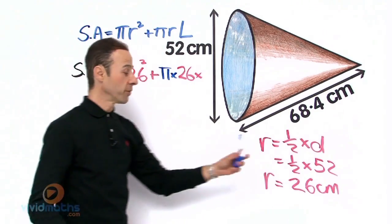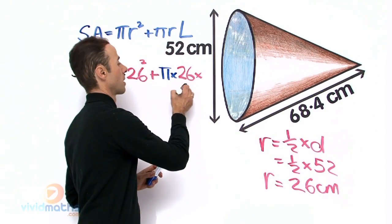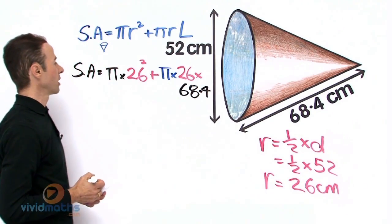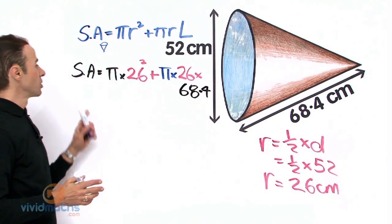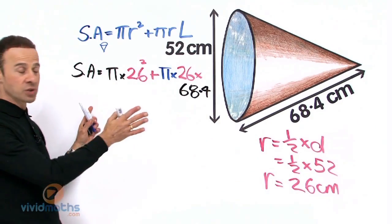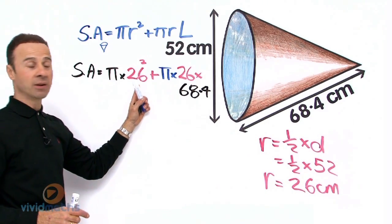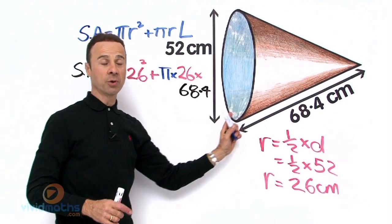Again 26, and the slant length is 68.4. Okay, let's take a closer look at the formula again. Surface area for a cone, a conventional cone, π times 26 squared. That will give us the value of that circle area right there, that blue component.